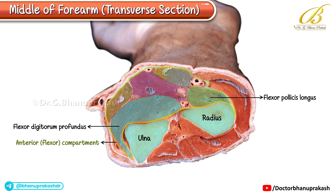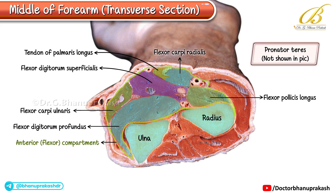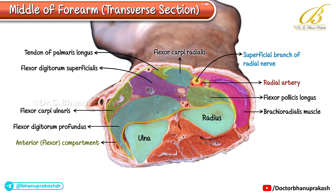Now let's move to the superficial layer. At this level, four superficial muscles can be identified, named from medial to lateral: flexor carpi ulnaris along the ulnar side, flexor digitorum superficialis lying just above the profundus, the tendon of palmaris longus, and flexor carpi radialis on the lateral side. The pronator teres, though also a superficial muscle, is not visible here because this section is taken below its insertion. Just lateral to the flexor carpi radialis, we can identify a neurovascular bundle which includes the radial artery and the superficial branch of the radial nerve, both lying underneath the brachioradialis muscle.